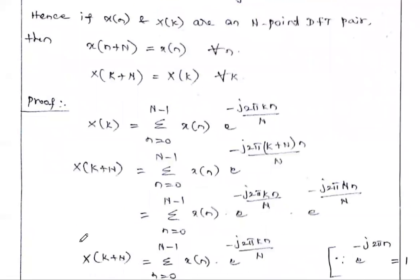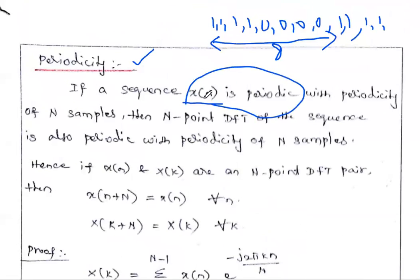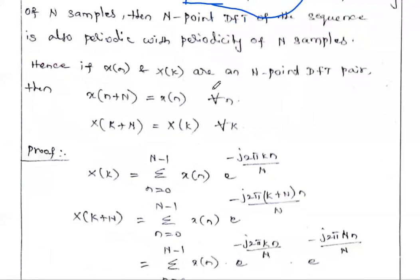Now we are going to prove this property. This statement is mathematically indicated as X(n) = X(n + N). The sequence X(n) is periodic means X(n) = X(n + N) for all values of n. Then the corresponding DFT answer, capital X(k), is also equal to X(k + N). If the sequence is periodic with N samples, the corresponding DFT answer is also periodic with N samples. This is the periodicity property.